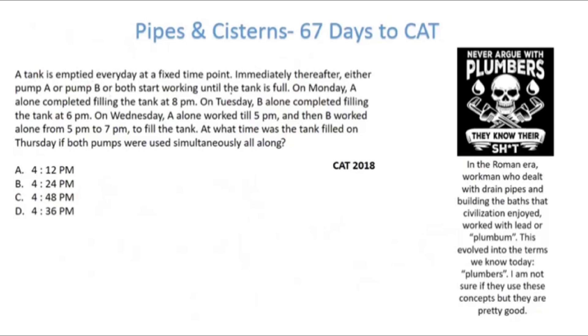A tank is emptied every day at a fixed point. Immediately thereafter either pump A or pump B or both start working until the tank is full. On Monday A alone completely filled the tank at 8pm. Let's say the number of hours were x from the starting point. On Tuesday B alone completed filling the tank at 6pm, which means the time taken here is x minus 2.